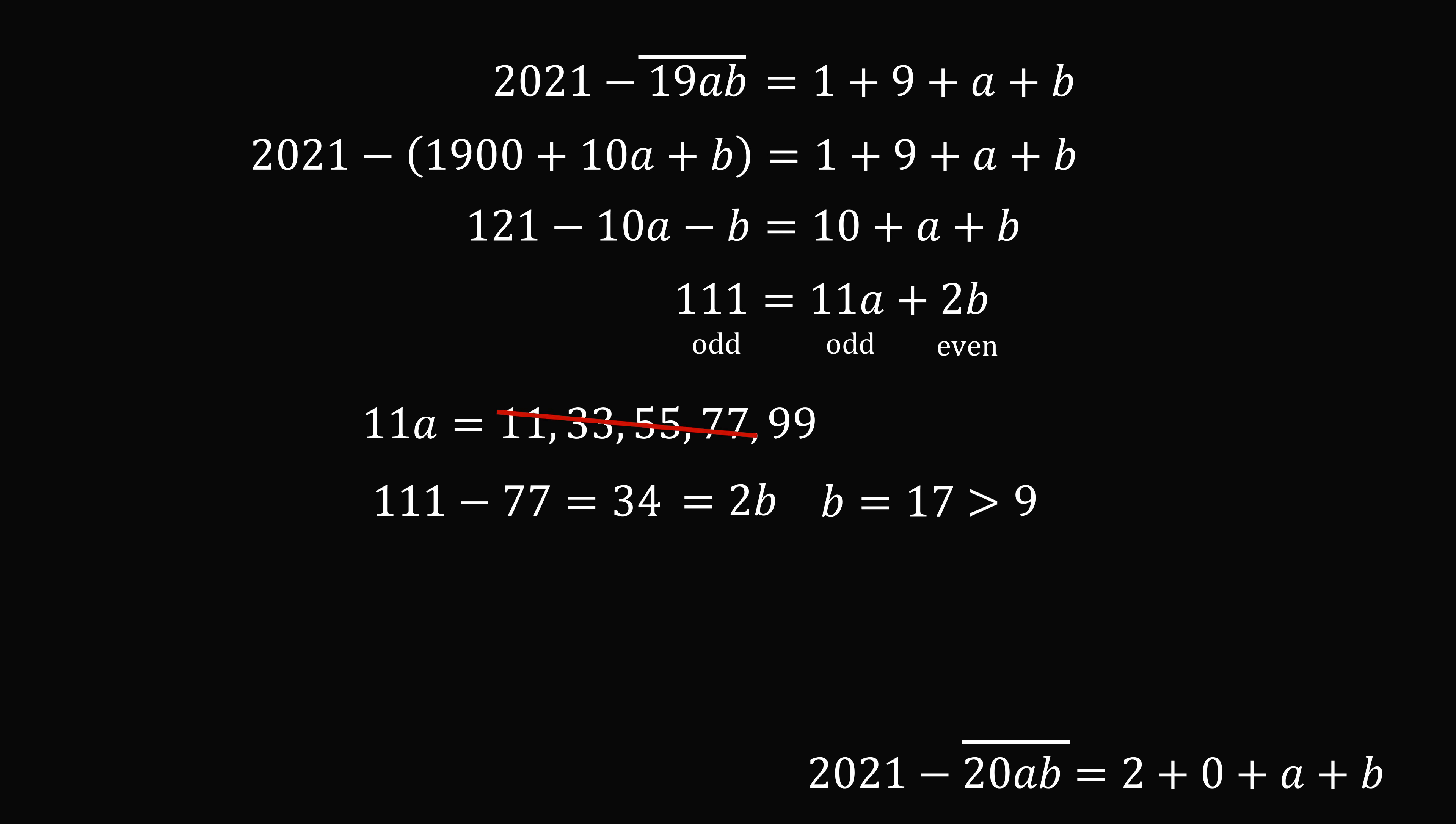So, we can eliminate all of these cases. The only possibility that might work is 11a is equal to 99. In that case, 111 minus 99 is equal to 12. That's equal to 2b, which means b is equal to 6. For 11a to be equal to 99, a is equal to 9. So, this gives us a solution of 1996.